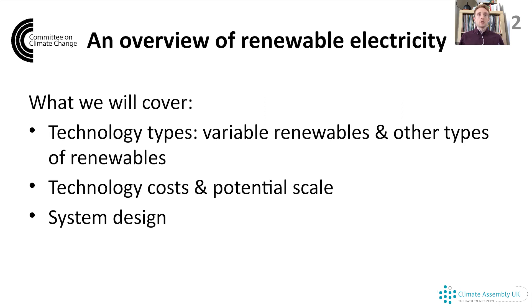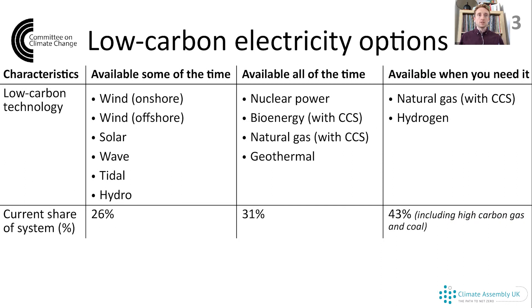Moving on to slide three for an overview of low carbon electricity options. The key thing about electricity is that we need to produce almost exactly the same amount of electricity that we use at all times. So if I switch on a light in my home, something turns on or increases output so that my light can be as bright as I want it to be. This table notes what types of low carbon electricity we could have in the UK, the role they play, and their current share of the system.